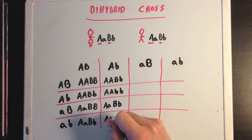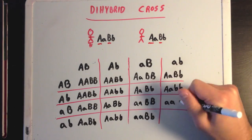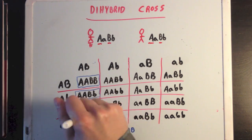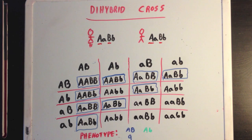Lining up the possible gametes, we see that 16 different genotypes can be produced from the cross. If we want to look at phenotypes, we notice that nine of the 16 phenotypes will lead to the dominant phenotype appearing for both genes.